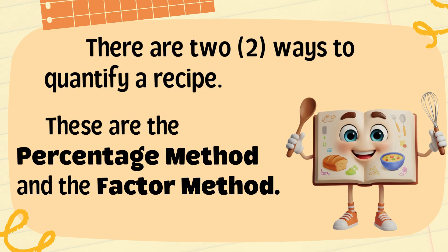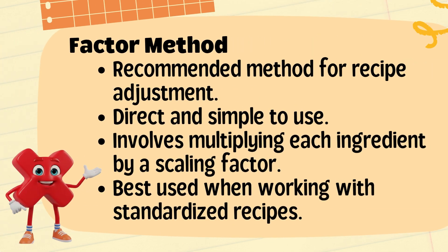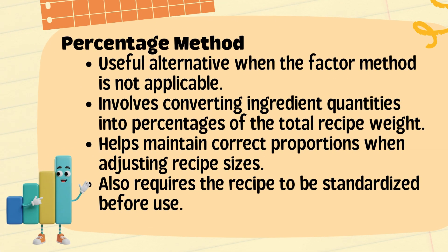There are two ways to quantify a recipe: the percentage method and the factor method. The factor method is the recommended method because it is direct and simple to use, but the percentage method can sometimes come in handy and also deserves a closer look. The prerequisite to both, however, is that the recipe being used is a standardized one. The percentage method is a useful alternative when the factor method is not applicable — it involves converting ingredient quantities into percentages of the total recipe weight, helps maintain correct proportions when adjusting recipe sizes, and also requires the recipe to be standardized before use.